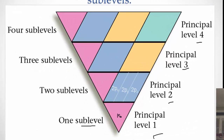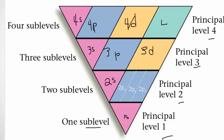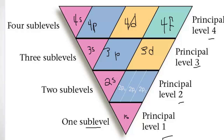Energy level three has three sublevels: 3s, 3p, and 3d. Energy level four has four sublevels: 4s, 4p, 4d, and 4f. You need to memorize s, p, d, and f in that order — s, p, d, and f. As we do more, those will come to you.